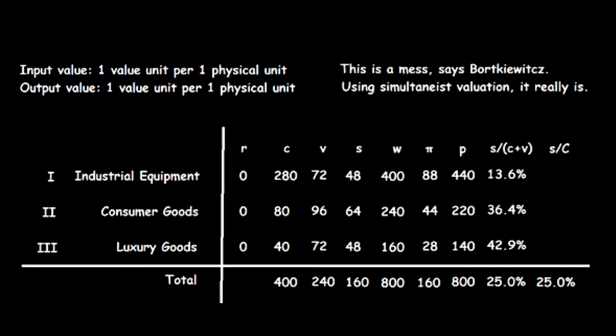Consumer goods are underproduced. Industrial equipment is overproduced. Luxury goods are underproduced. Marx's tables seemingly cannot reflect reality. There is a problem — a big transformation problem.